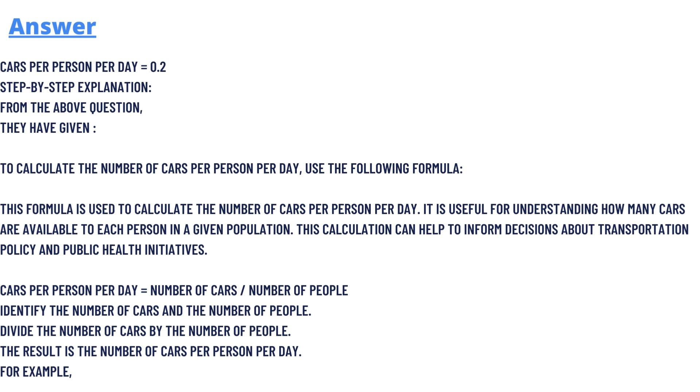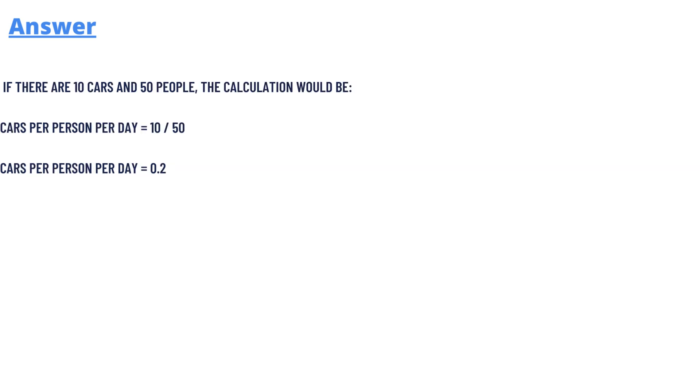The formula we will be using is: cars per person per day equals number of cars divided by number of people. Identify the number of cars and the number of people, divide the number of cars by the number of people, and the result is the number of cars per person per day.